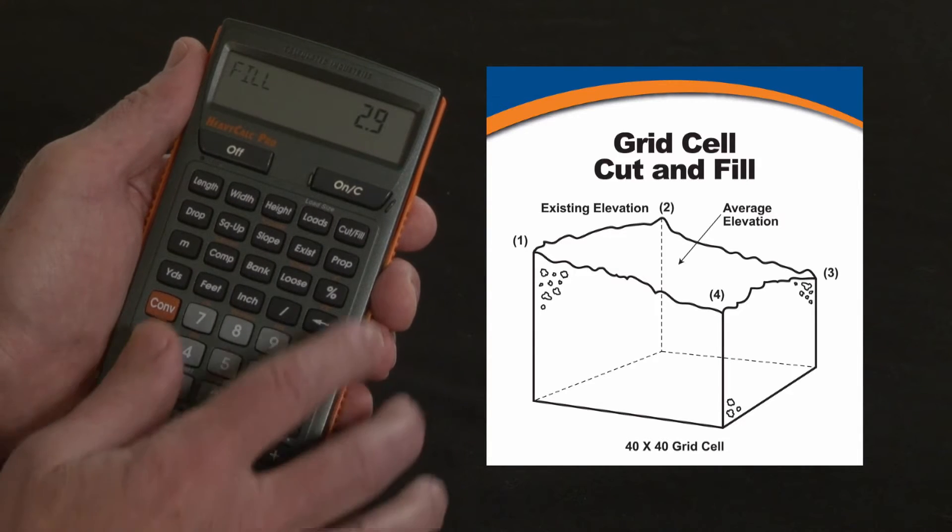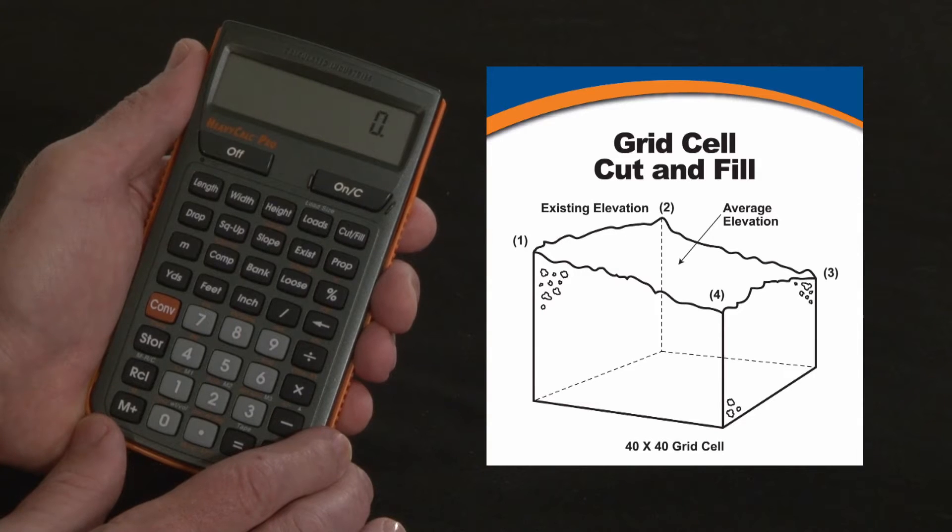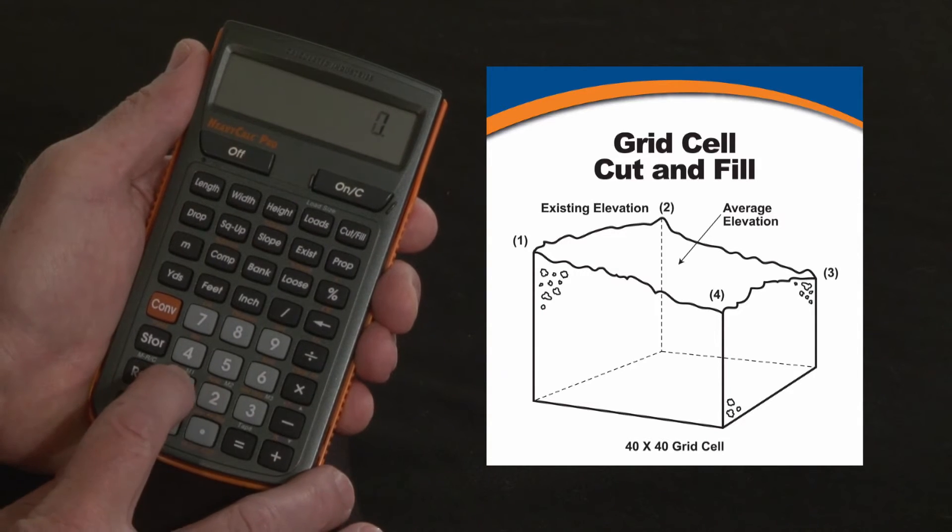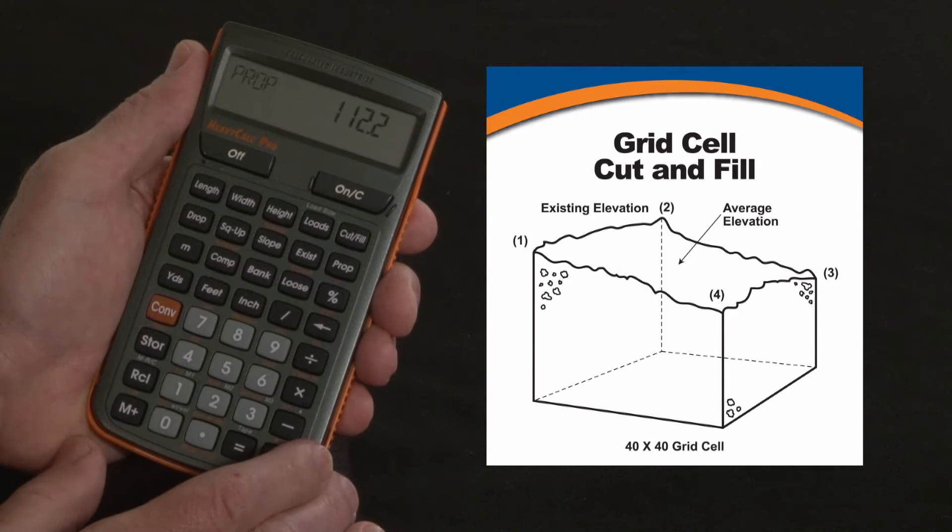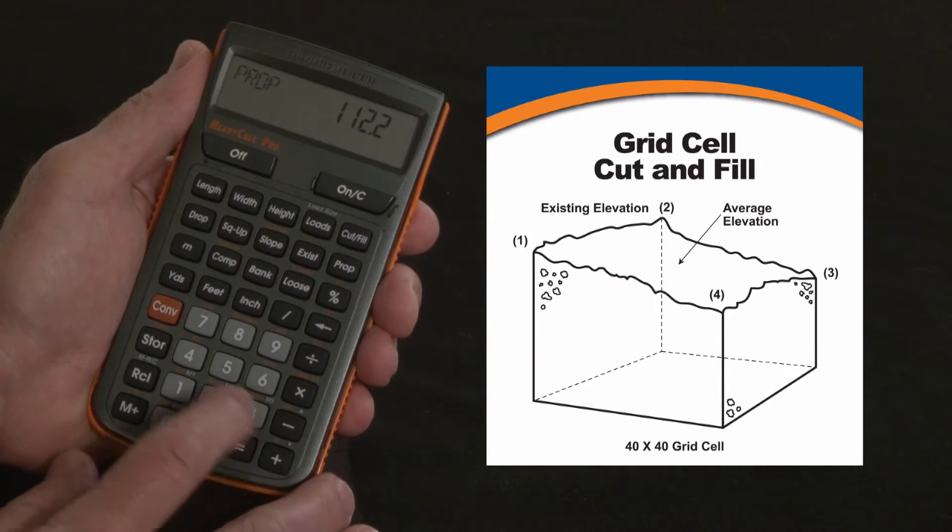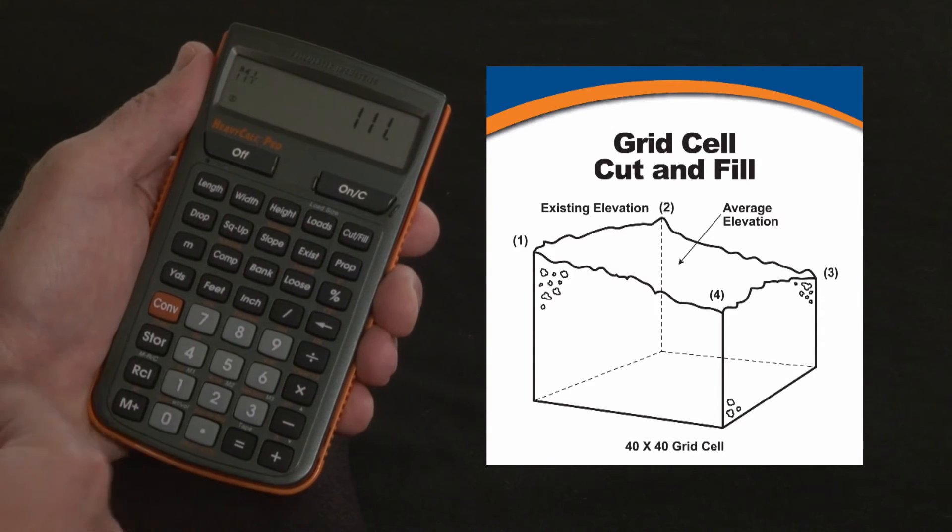Now what if it's a little bit bigger situation? Maybe it's a 40 by 40 grid, 1600 square feet. We use the same proposed, 112.2 is our proposed grade, and you shoot the four corners and you get numbers like 111 on the first one. I'm going to put that in the memory and accumulate these numbers.